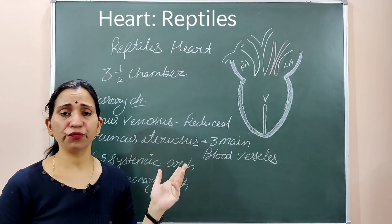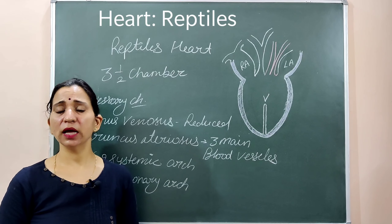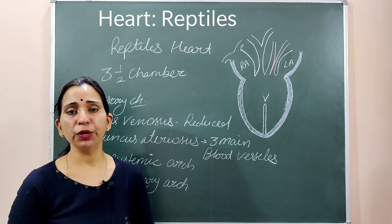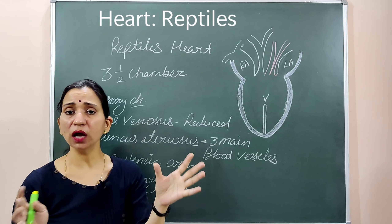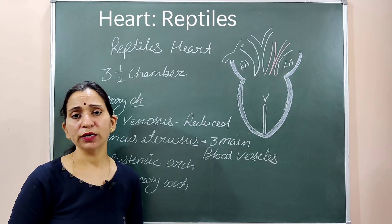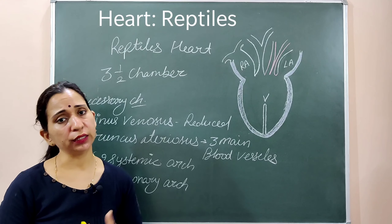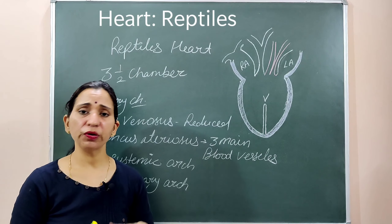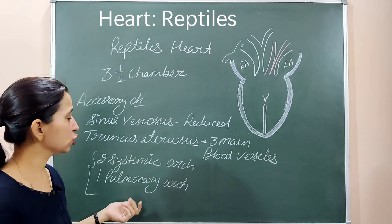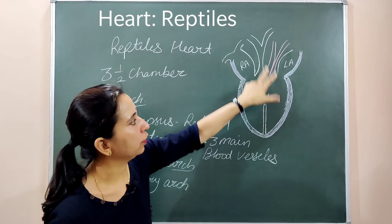As evolution progresses — from fish with a two-chambered tubular heart, to amphibians with a three-chambered heart where the atria are completely divided but the ventricles are not, to reptiles with a three-and-a-half chambered heart where the ventricles are partially divided. The accessory chambers also change: the conus arteriosus in amphibians became the truncus arteriosus, and in reptiles the truncus arteriosus converts into the systemic arches and the pulmonary arch.